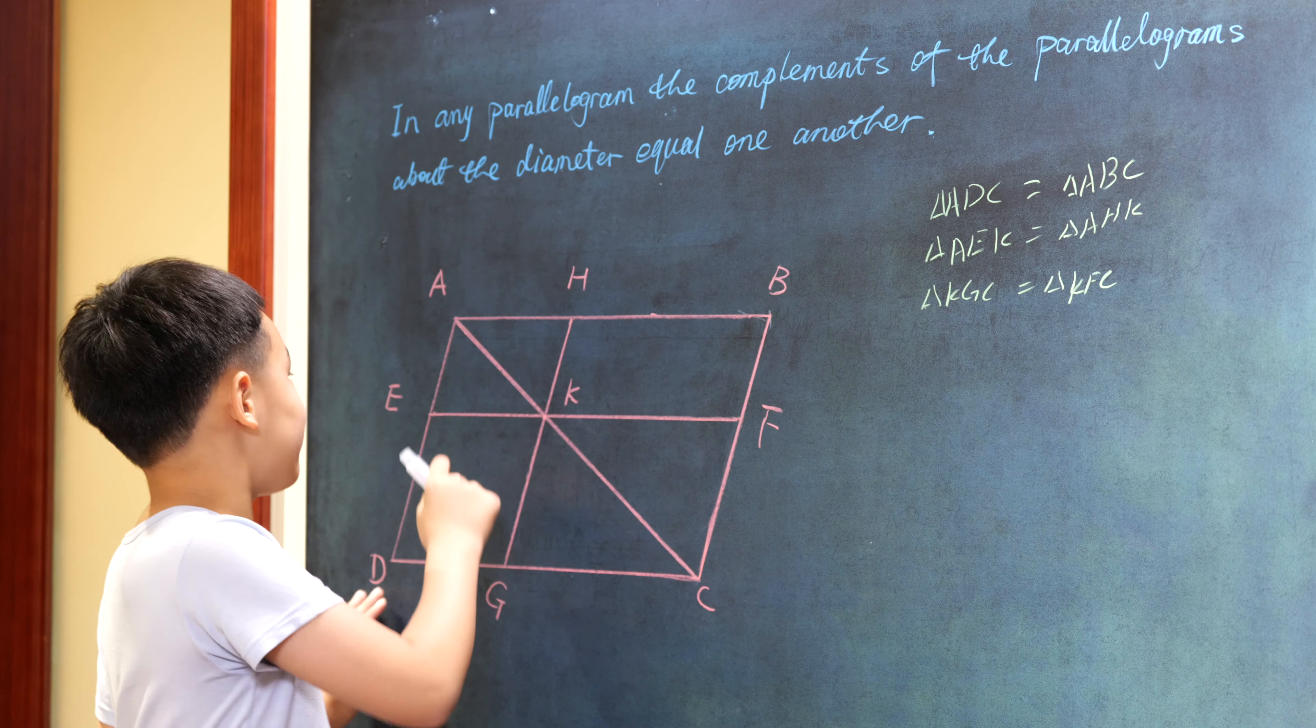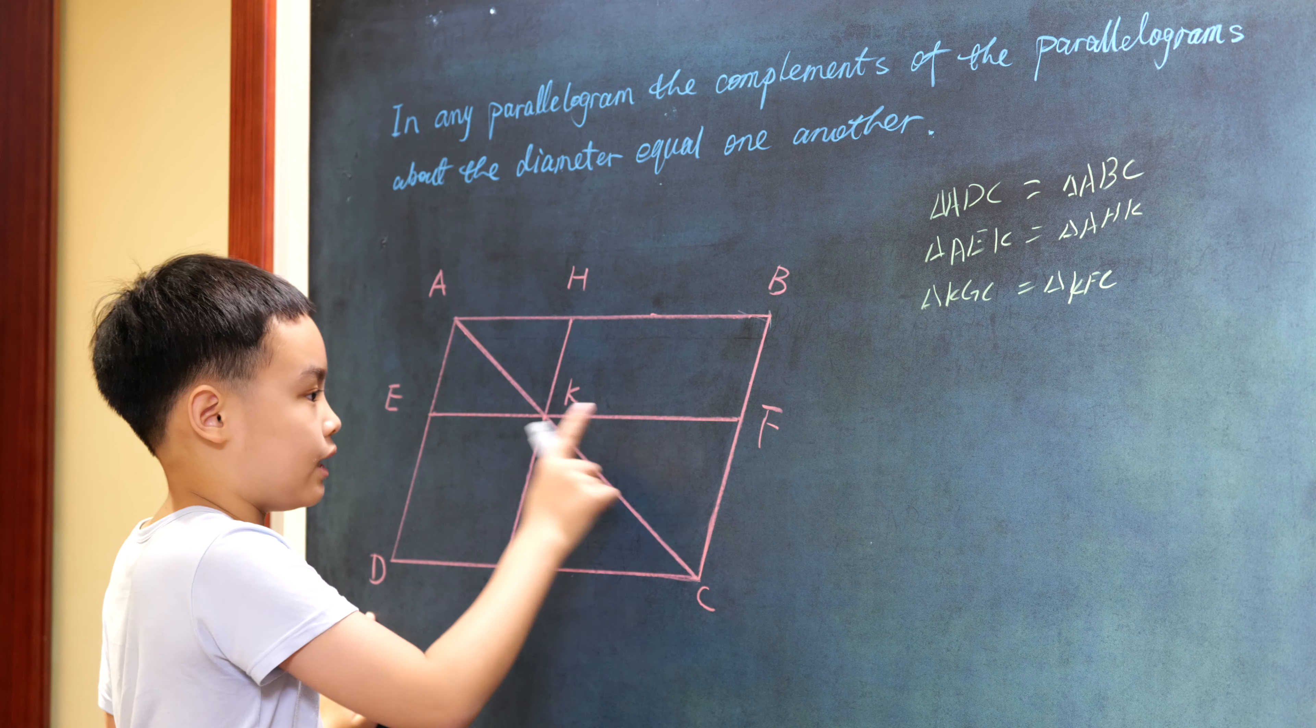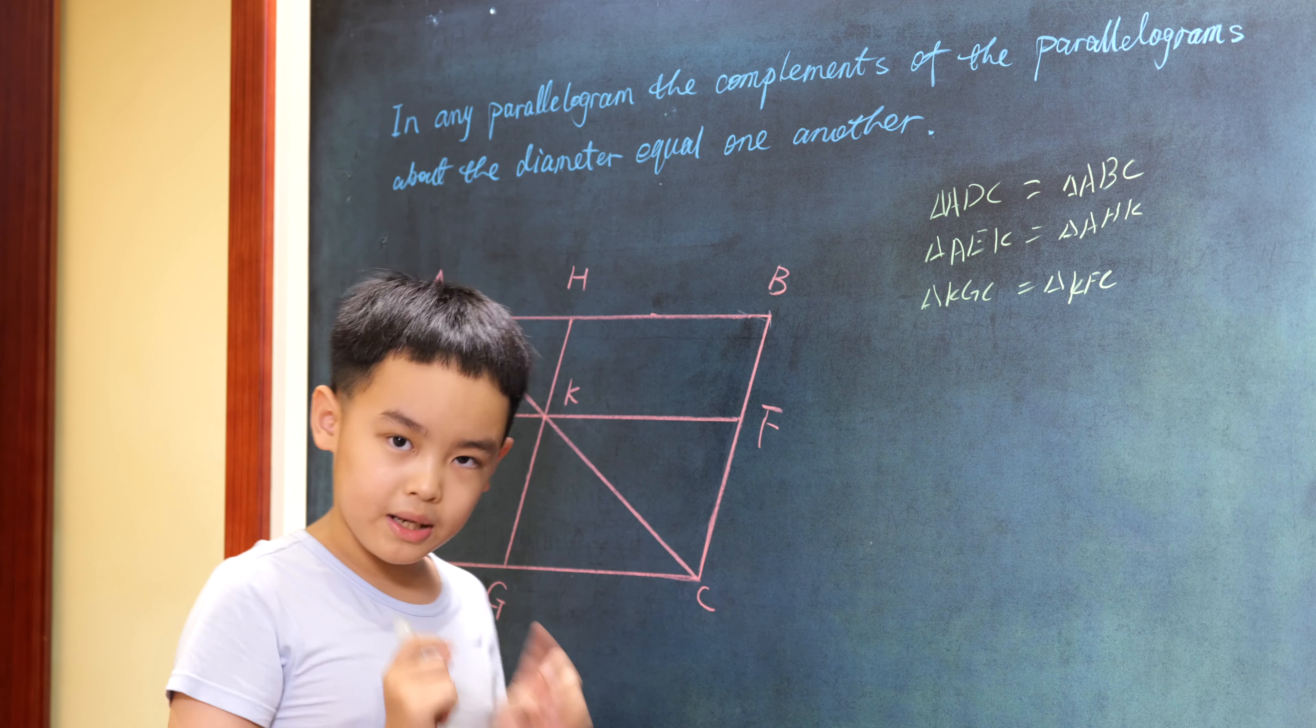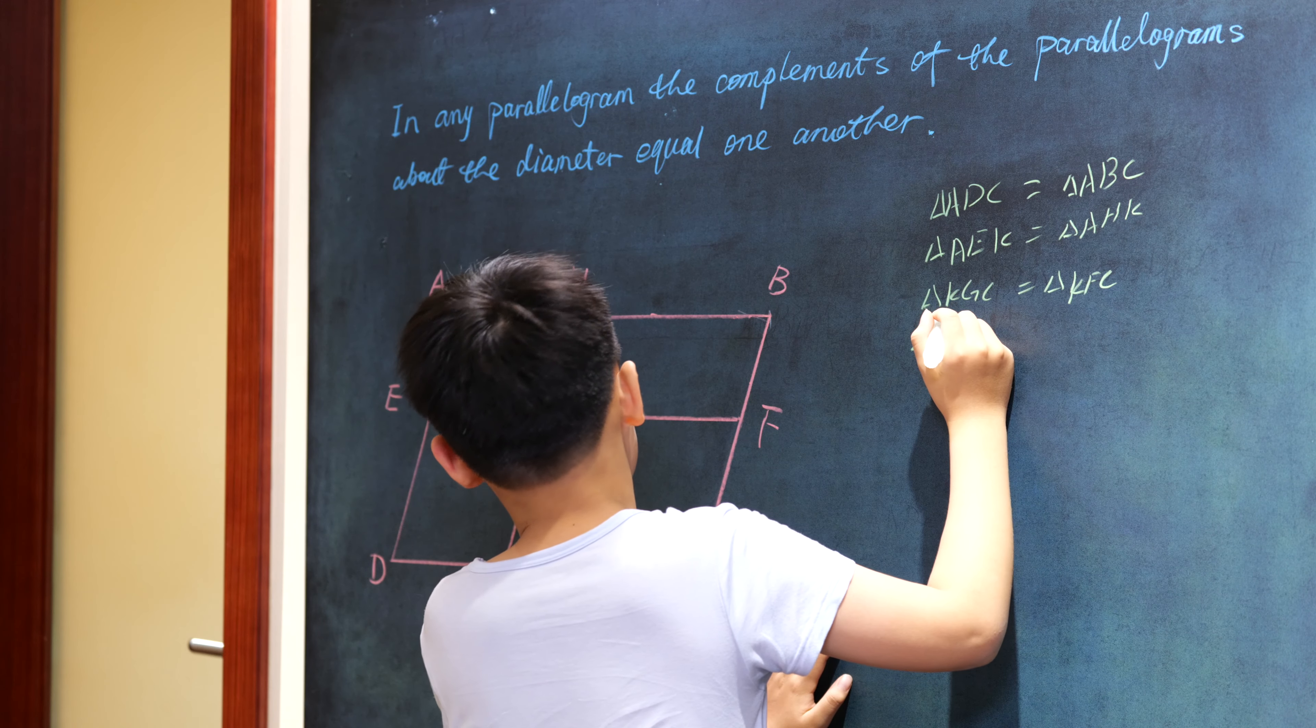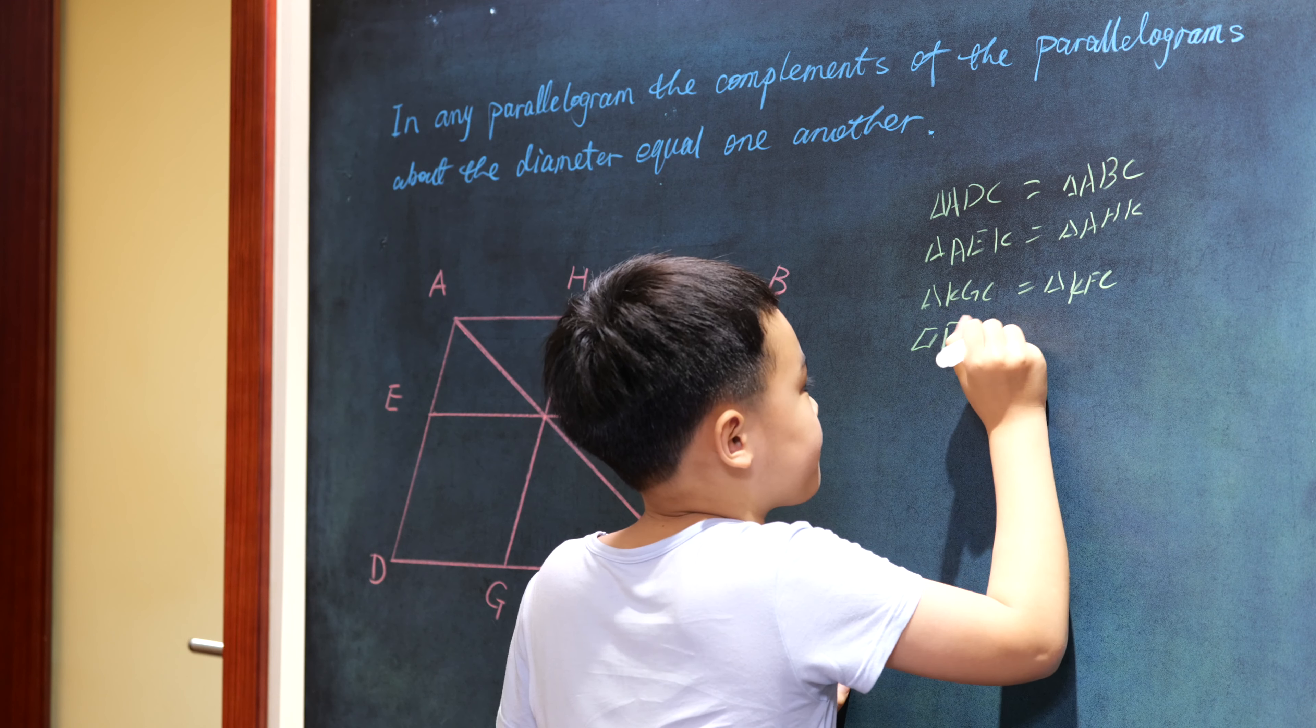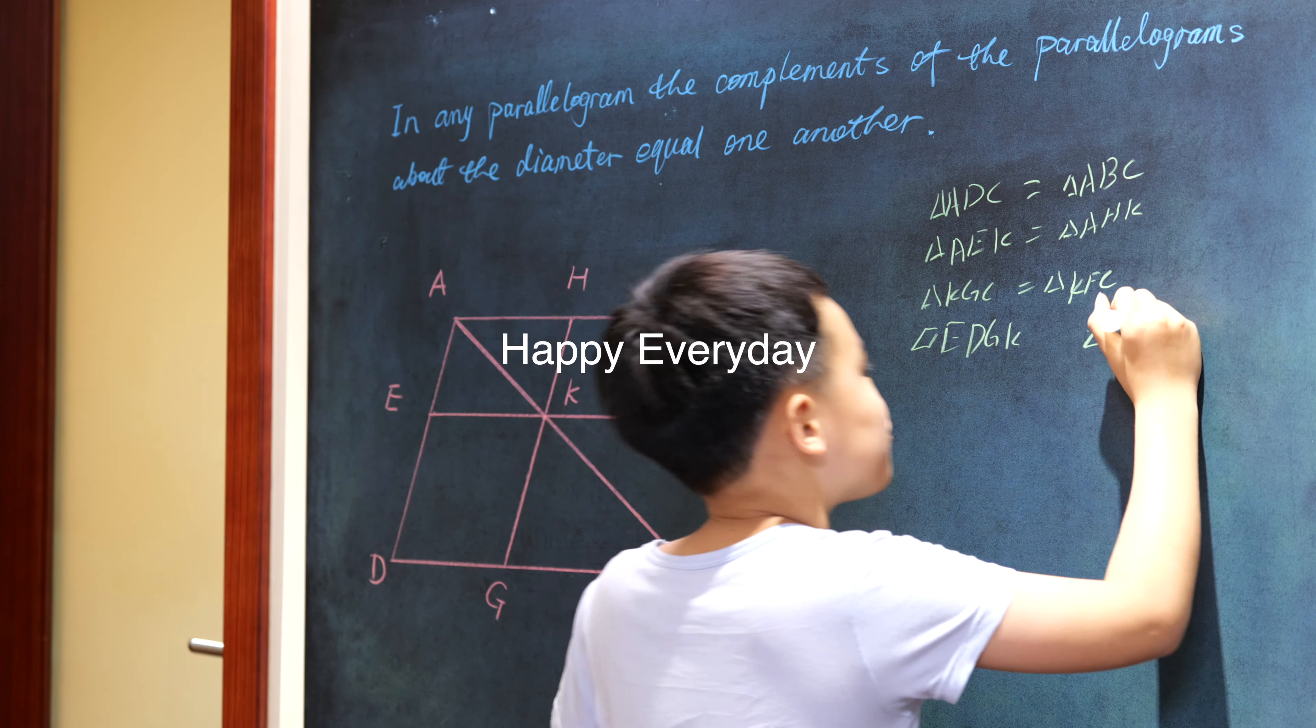And we have triangle AEK equal to AHK, and KGC equal to KFC. Then we can cut all these shapes down because they are equal. And at last, we proved that the complement EDGK and the complement HKFB are equal.